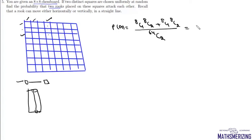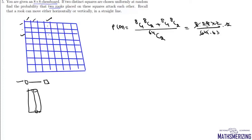8C1 is 8, and 8C2 is 8×7÷2 = 28. Since both horizontal and vertical cases give the same count, the total favorable outcomes are 2 × 8 × 28 = 448, over the total 64C2 = 64×63÷2. This simplifies to give the probability that the two rooks attack each other as 2/9.